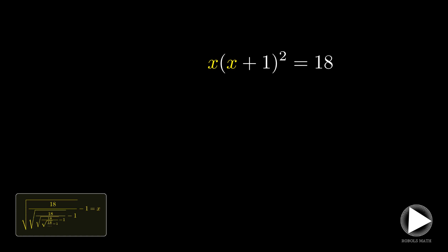We expand the polynomial using the binomial theorem and polynomial operations to get x cubed plus 2x squared plus x equals 18. We write further to make it x cubed plus 2x squared plus x minus 18 equals zero.